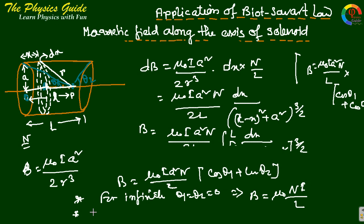And there is another condition. If P be at any end, then theta 1 equals 90 degrees and theta 2 equals 0 corresponding to 0. So this is B equals mu0 N I by 2L.